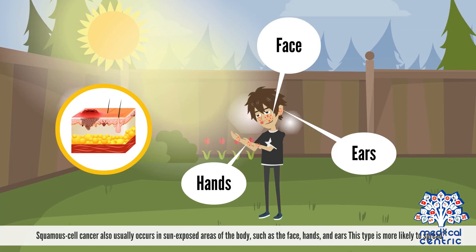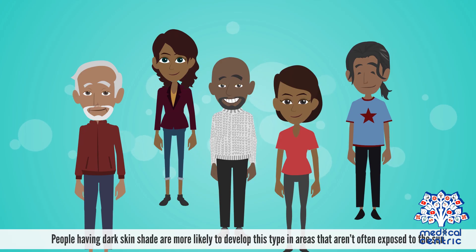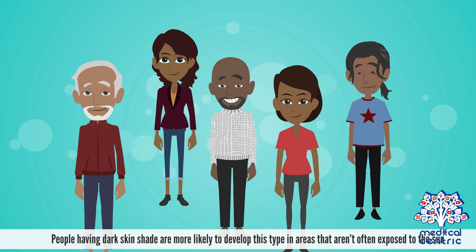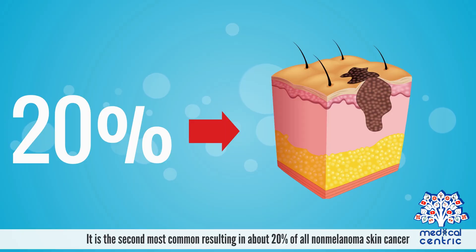Squamous cell cancer also usually occurs in sun-exposed areas of the body, such as the face, hands, and ears. This type is more likely to spread. People having dark skin shade are more likely to develop this type in areas that aren't often exposed to the sun. It is the second most common, resulting in about 20% of all non-melanoma skin cancer.